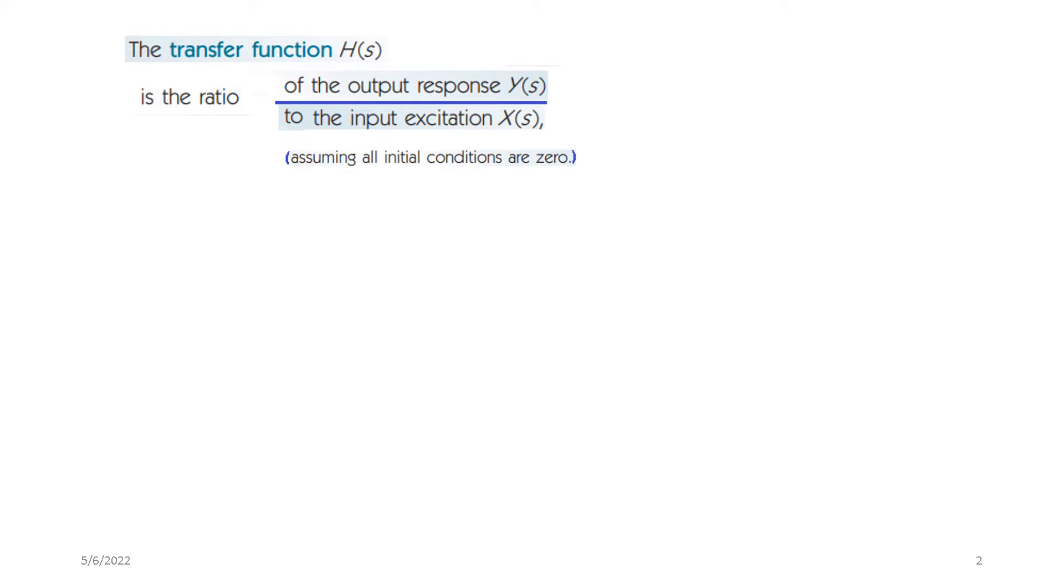Now the transfer function H(s) is defined as the ratio of the output response to the input excitation, assuming that all initial conditions are zero. So if we have a linear system whose transfer function is H(s), whose input is X(s) and output is Y(s), then the transfer function can be written as H(s) is output divided by input, that is Y(s) divided by X(s).